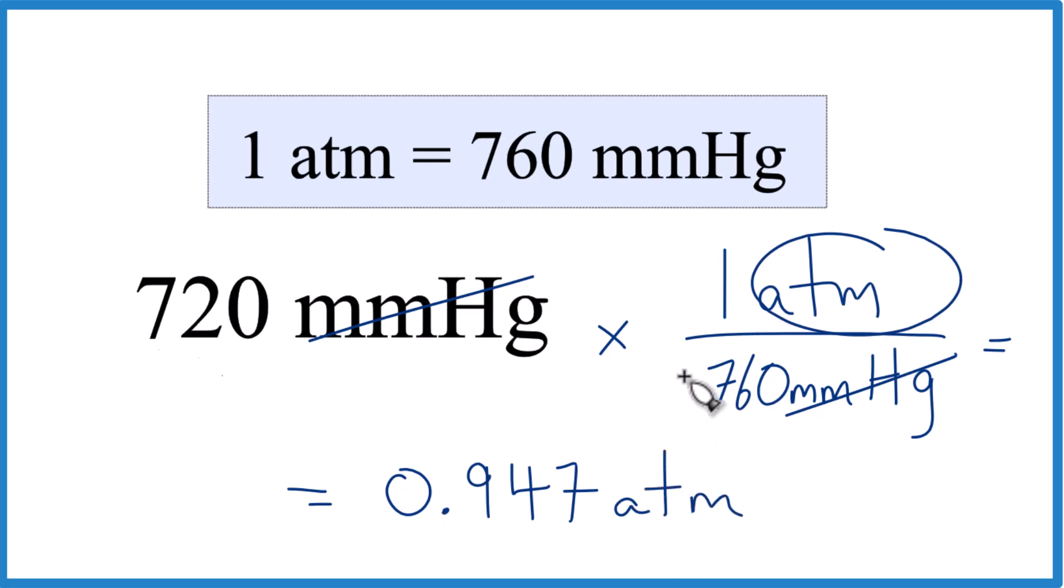So that's it. That's how you convert 720 millimeters of mercury to atmospheres. This is Dr. B. Thanks for watching.